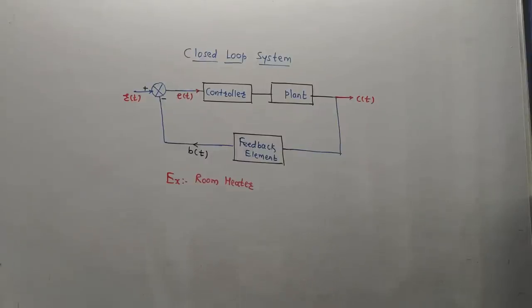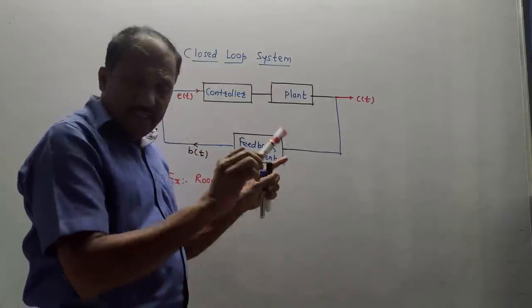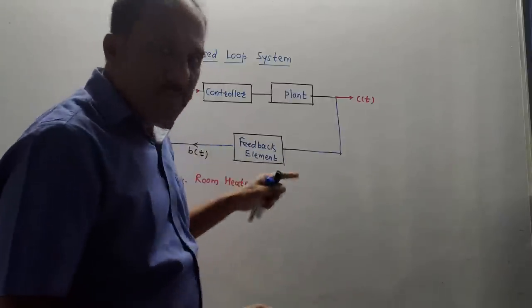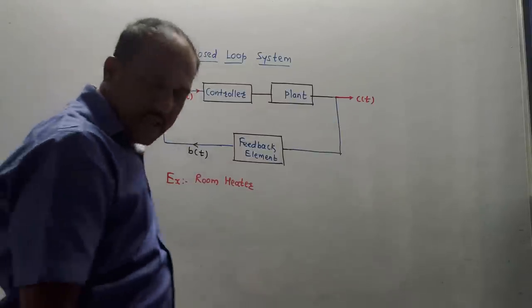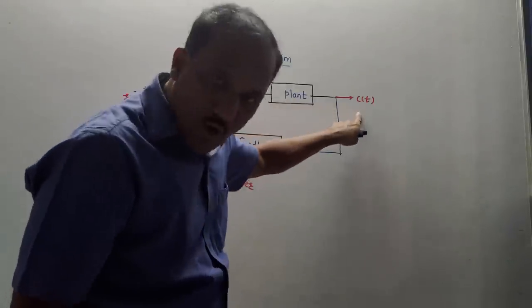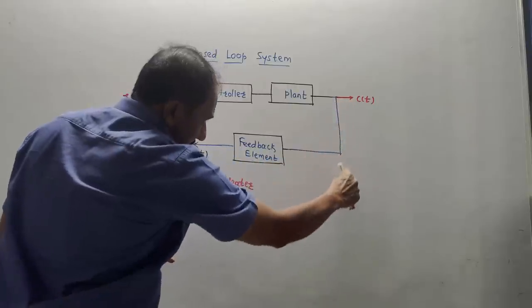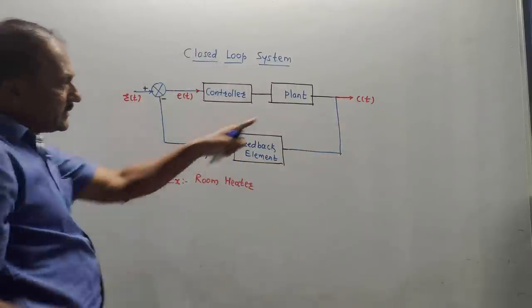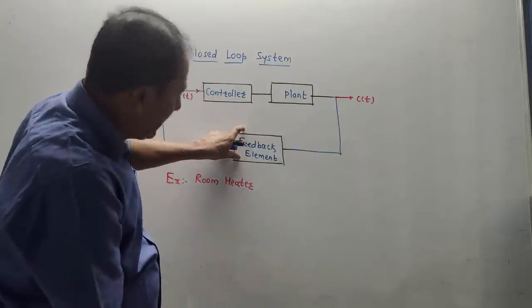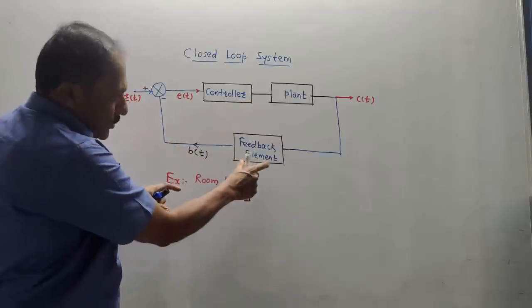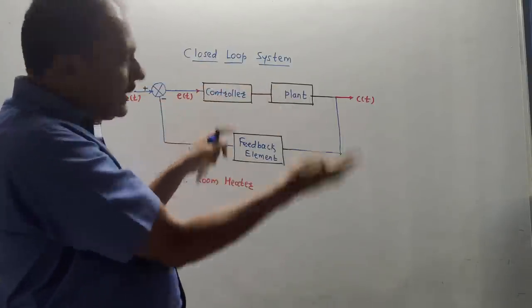The next part is the closed loop system. This is the block diagram of the closed loop system. In this case there is a feedback connection. r of t indicates the reference input and c of t is the controlled output. Part of the output is connected back to the input side — this is known as a feedback connection. This is a feedback element; depending on the application we choose the particular element. The controller and plant are similar to the earlier block diagram.